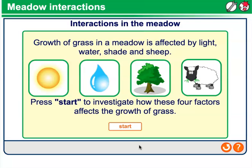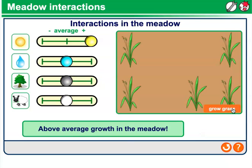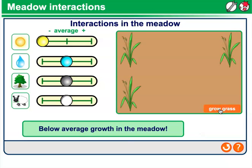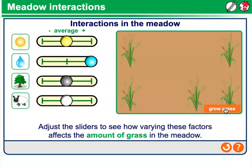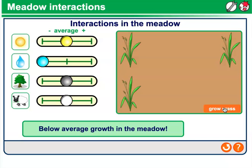Let's explore some interactions in a given ecosystem. The growth of grass in a meadow is affected by light, water, shade, and also by predator species — in this case, sheep. If the average amount of sunlight increases, we are going to have above-average growth. If that same variable decreases, we are going to have below-average growth. If our amount of water increases, we'll have above-average growth. If it decreases, we will have below-average growth.